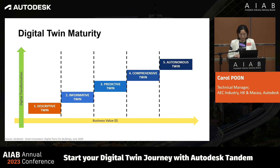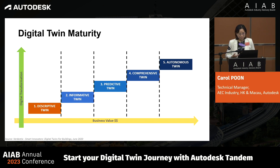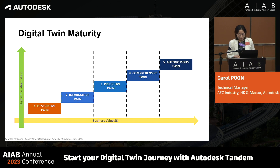The next level is the informative twin, which adds operational and sensor data to the twin, making it a single pane of glass. Thirdly is the predictive twin, which begins to leverage that operational data for insights. And the comprehensive twin adds simulation for future what-if scenarios. The last one is the autonomous twin, which has the ability to learn and act on behalf of the user and self-tune the facility.